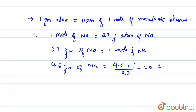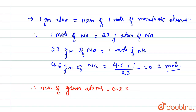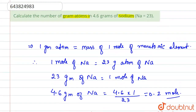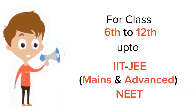So this is 0.2 moles. Therefore, the number of gram atoms equals 0.2 multiplied by Avogadro's number, 6.022 × 10²³ atoms. This equals 1.204 × 10²³ atoms. So this is our answer.